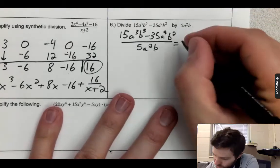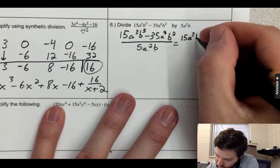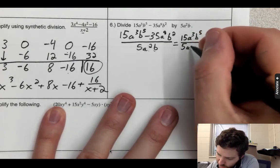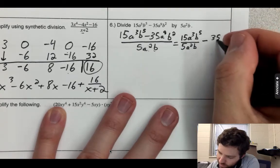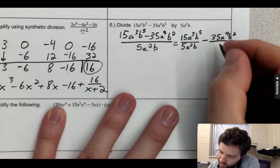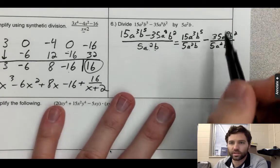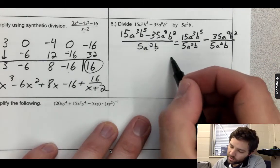So it will look like this: 15a³b⁵ divided by 5a²b minus 35a⁹b² divided by 5a²b. I'm just breaking it into two fractions, and then what you can do is